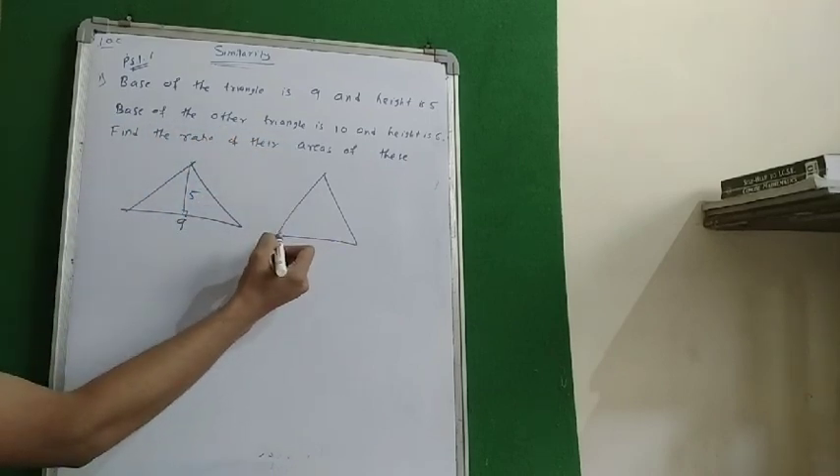There is another triangle. The base of the other triangle is 10 and height is 6. So we have two bases, two heights of two different triangles.